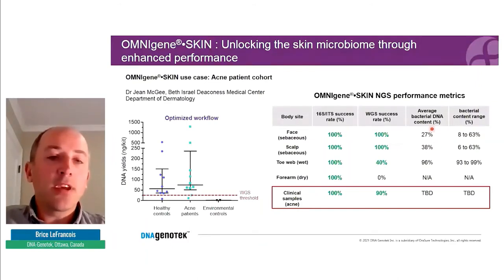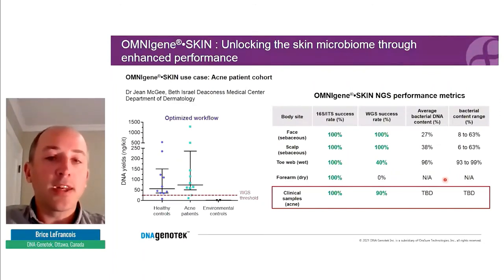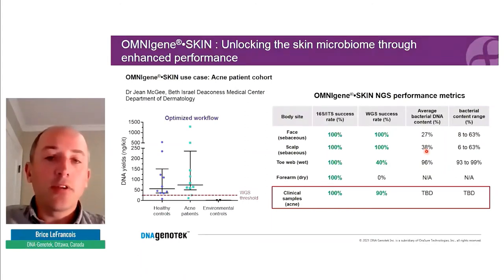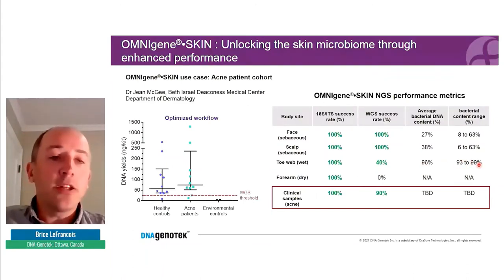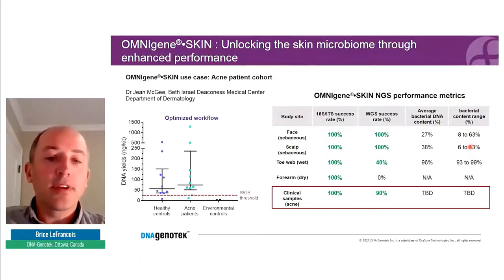We did shotgun sequencing and looked at the overall average bacterial DNA content. The challenge with shotgun sequencing on skin is the large amount of host material. However, for face and scalp, we're getting anywhere between 30 and 40% bacterial DNA. Toe web samples were surprisingly almost exclusively bacterial DNA — about 96%. For sebaceous skin sites the range is donor dependent — anywhere between 8 and 63%.